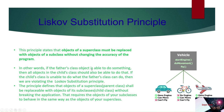In other words, if the father class object is able to do something, then all objects of the child class should also be able to do so. All child classes would have those properties along with potentially additional properties. But whatever properties the father has, the child must at least have them too. If the child class cannot do what the parent class can, we are violating the Liskov Substitution Principle.